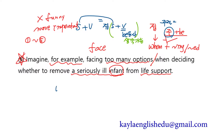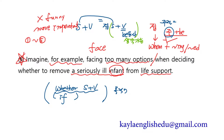whether라는 단어는 whether+주어+동사로 '뭐뭐인지 아닌지'라고 쓰이고, whether 대신 if를 써도 되는 경우가 있어요. whether+주어+동사 전체가 목적어 역할을 할 때만 if로 바꿔 쓸 수 있습니다. whether+주어+동사는 주어 역할도 하고 목적어도 하고 부사 역할도 해요. 'A이거나 B이거나'의 부사 의미일 때는 if로 바꿀 수 없어요. 또한 whether 다음에 to부정사가 나올 때도 if로 바꿀 수 없어요 — whether to remove: 제거하거나 아니거나를 결정할 때.